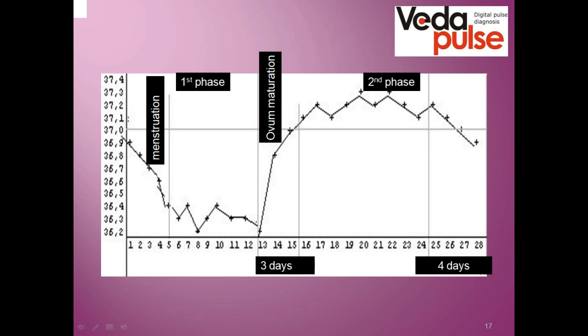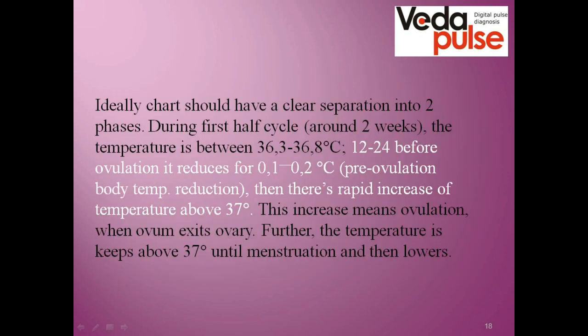This rapid increase indicates that ovulation has started. During the second phase, the temperature remains high, then towards the end it reduces. This method is used by women as a natural way of contraception. Ideally, the chart should have a clear separation into two phases. During the first half of the cycle, which is around two weeks, the temperature is between 36.3 and 36.8 degrees Celsius. Then 12 to 24 hours before ovulation, it reduces by 0.1–0.2 degrees — this is called the pre-ovulatory temperature reduction.